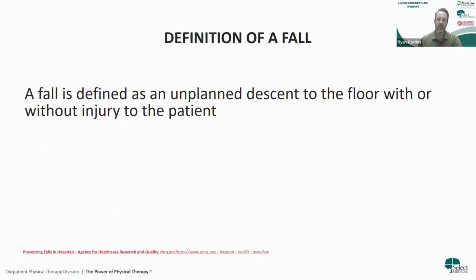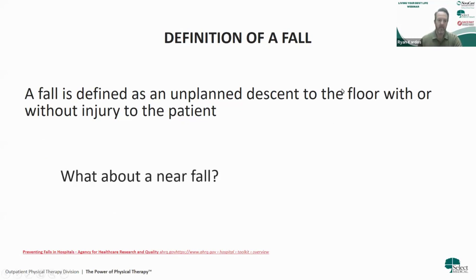A fall is defined as an unplanned descent to the floor with or without injury to the patient. But what about a near fall? There's really not so much of a definition there. That's something that happens to a lot of us — maybe on a regular basis we stub our toe or we lose our balance but we don't actually fall to the floor. Some people may define a fall only if they hit the floor, and this can be a controlled or an uncontrolled event.